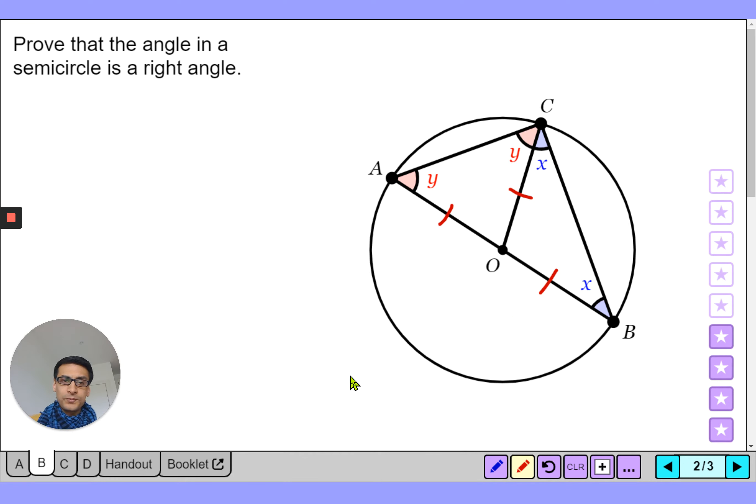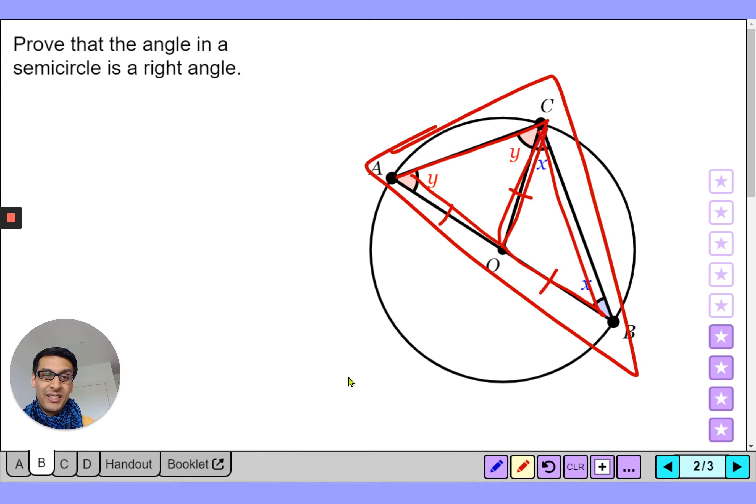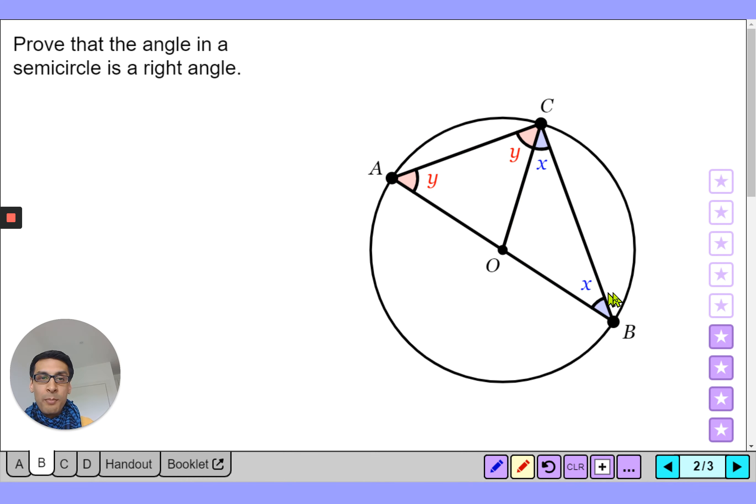Now we end up with technically three different triangles: you've got this triangle here, we've got this triangle here in the blue, and then we've actually just got one big triangle which I've just drawn around just so you can see it clearly.